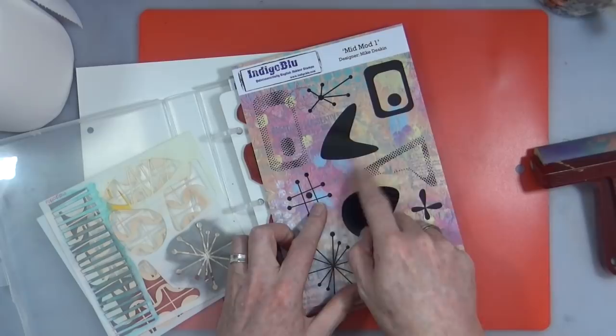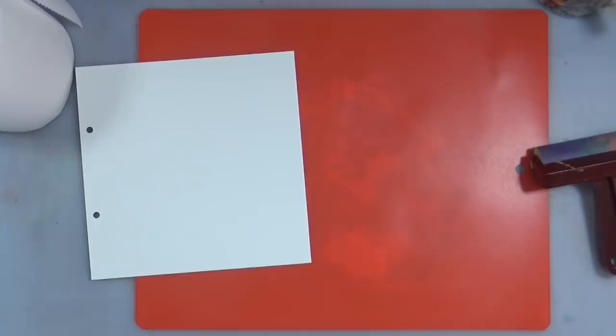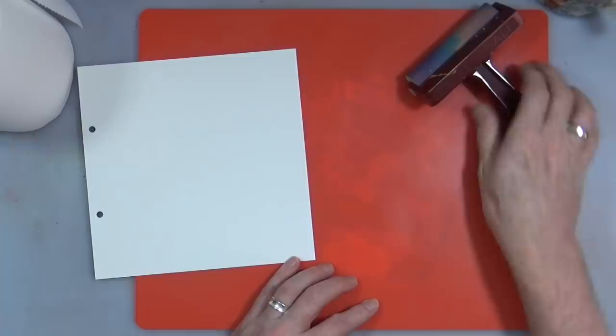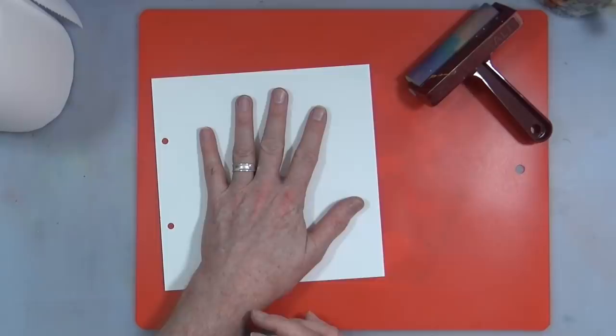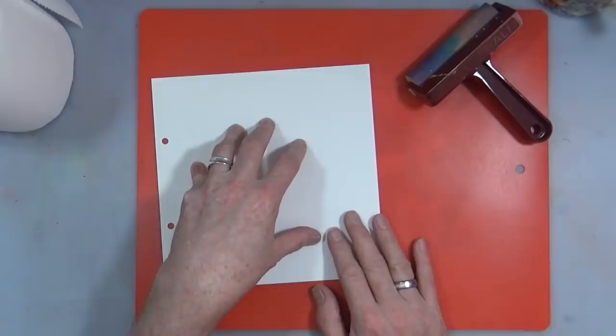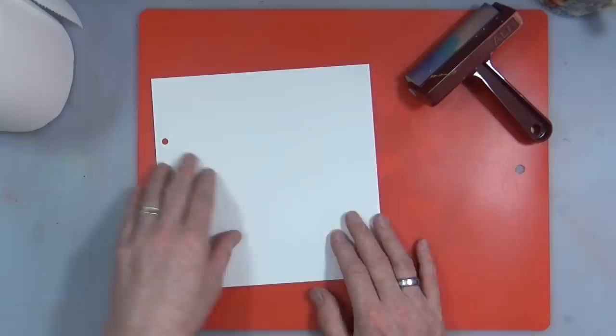I've got my brayer out as well, and I thought I'm going to try and build up a background first of all onto some watercolor cardstock. This is 300 GSM or 140 pound hot pressed watercolor cardstock. It's smooth, there's no grain or texture to it. It's supposed to be better for stamping on.